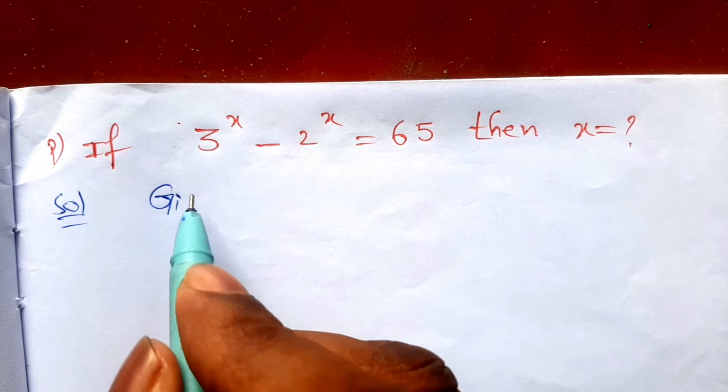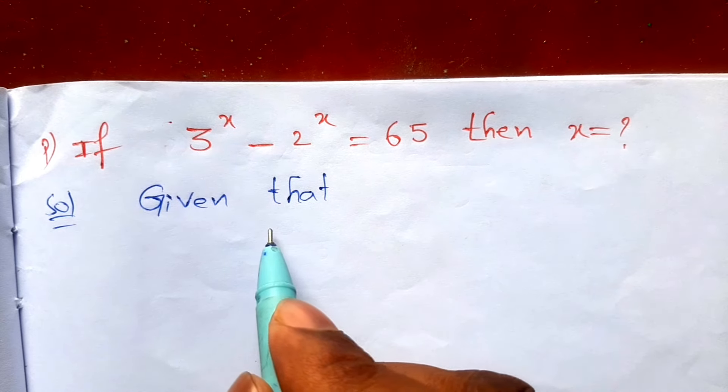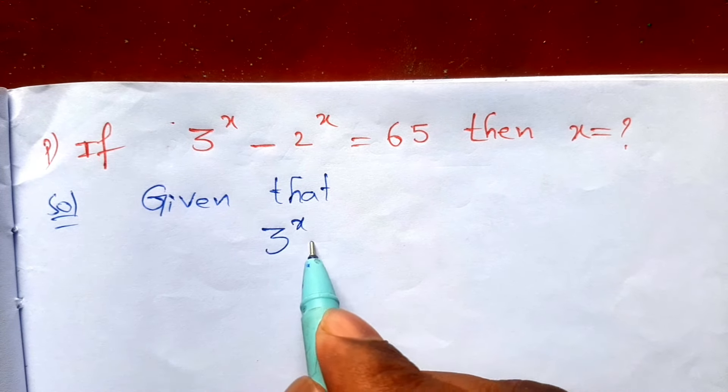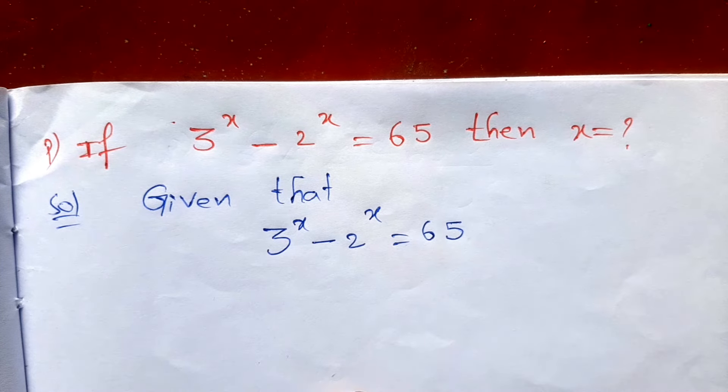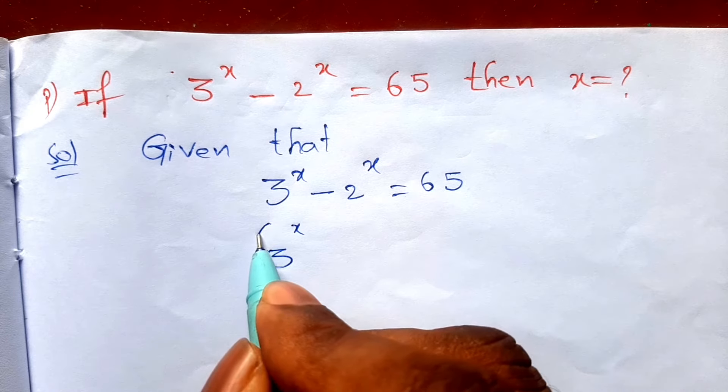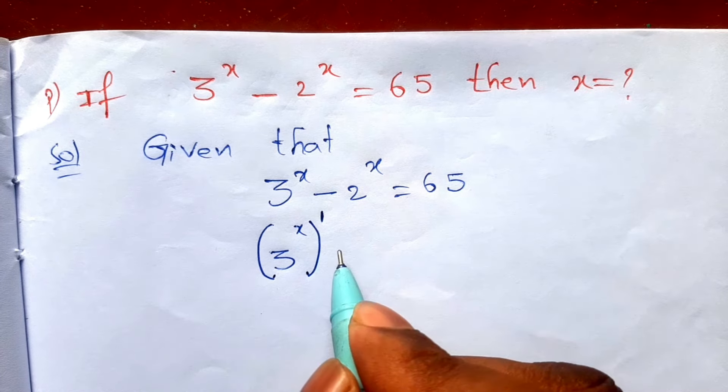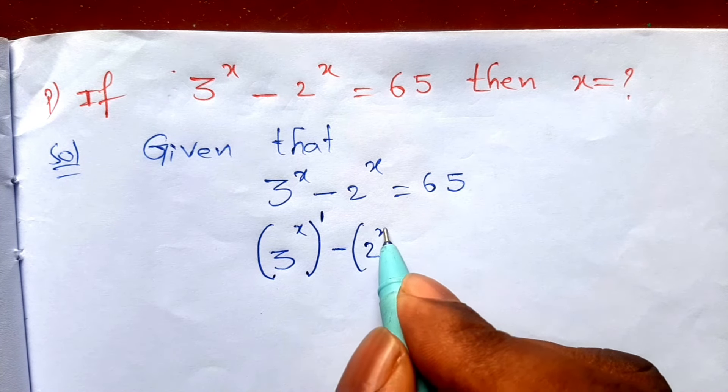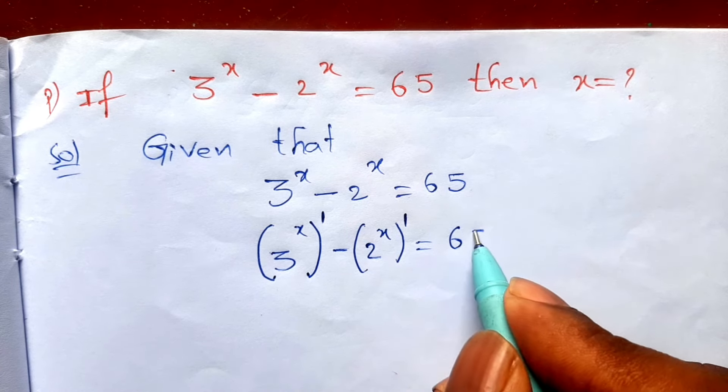Given that 3 to the power x minus 2 to the power x is equal to 65. 3 to the power x, power is 1 is there, minus here also 2 to the power x, power is 1 is there, is equal to 65.